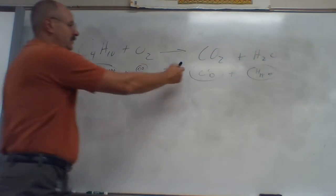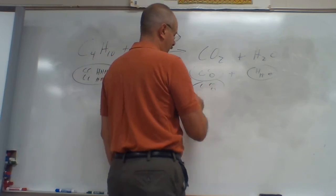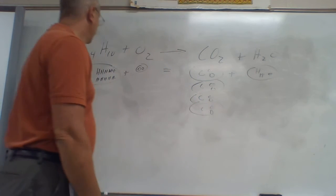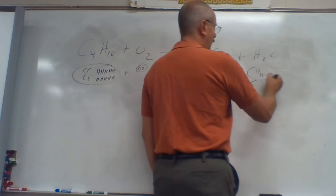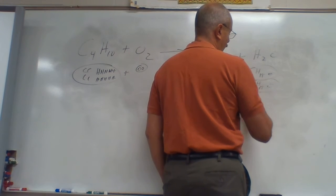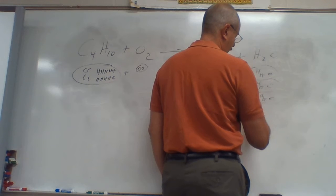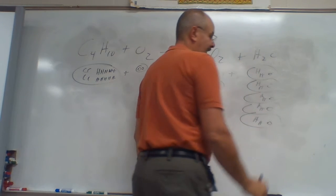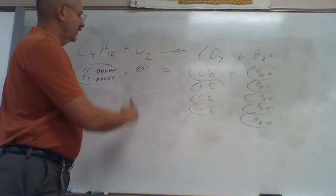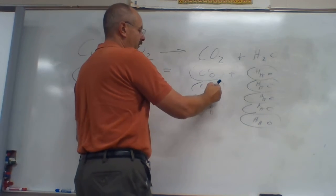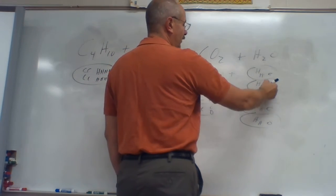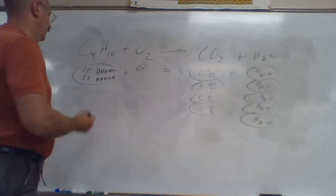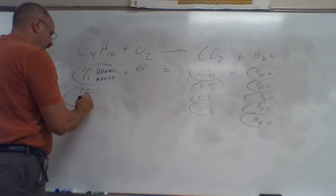I got four C's, I need some more C's — there's two, three, four. H's: I got ten and I only got two, so I need some more — four, six, eight, ten. O's: I got two on this side, and on the other side I got one, two, three, four, five, six, seven, eight, nine, ten, eleven, twelve, thirteen. I got thirteen and two — that's odd and even, so I'll go back and double this guy and start all over.